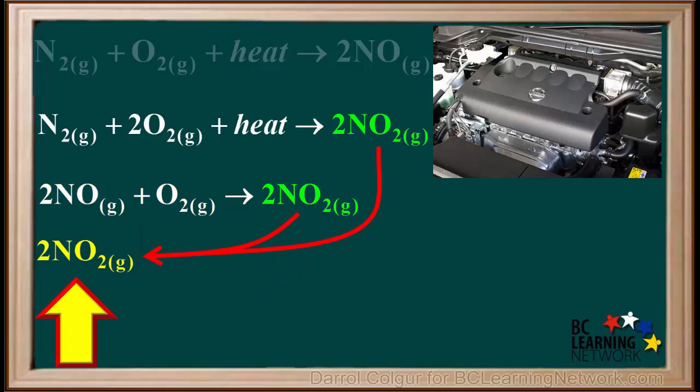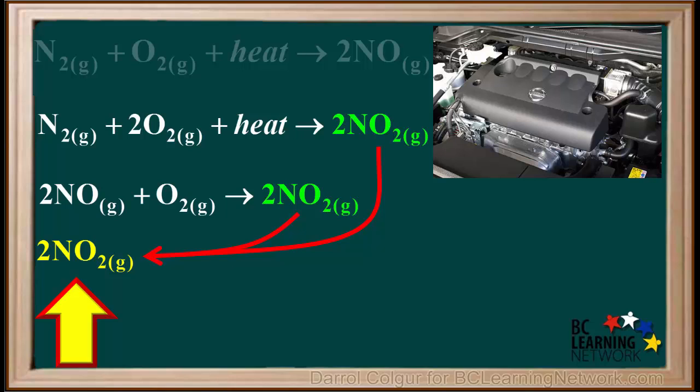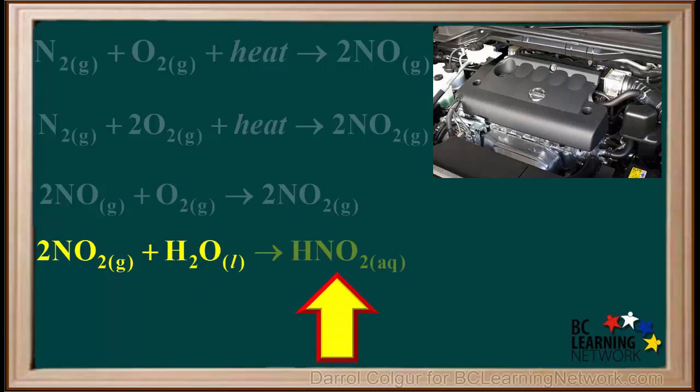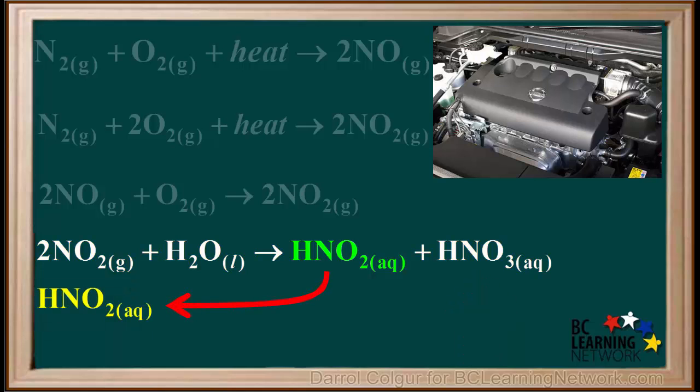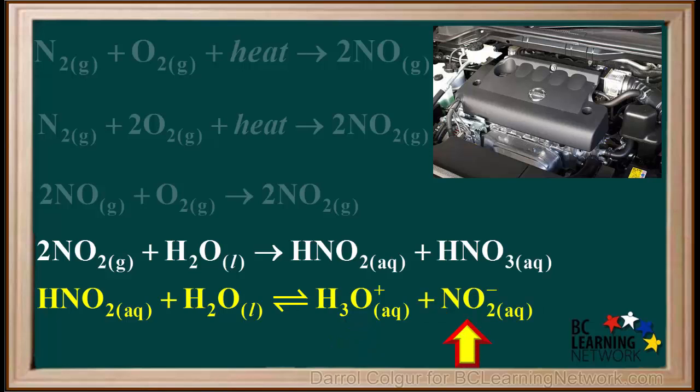This NO2 will be present in the exhaust of vehicles using these engines, and some of it will reach the atmosphere, where it will react with water droplets to produce nitrous acid HNO2 and nitric acid HNO3. Because it is a weak acid, HNO2 undergoes partial ionization in rainwater to produce hydronium ions and nitrite ions NO2-.